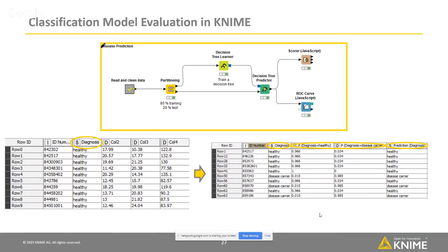Here we see again a workflow performing classification. The read data node contains one column with the actual target values and one column with the predicted scores that determine the class assignment, and then one column for the predicted target class values.